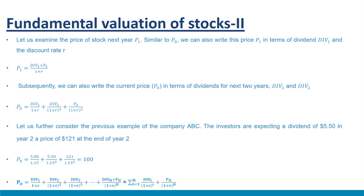We will develop a generic formula for the valuation of common stocks with the help of dividends. Till now, we have expressed the current price P₀ in terms of this year's dividend Div₁ and the price expected at the end of the year P₁. Let us move toward a more generic formula. We can write P₁ in terms of dividend Div₂, price P₂, and discount rate R: P₁ = (Div₂ + P₂) / (1 + R). Subsequently, the current price P₀ can be written in terms of dividends for the next two years: P₀ = Div₁/(1+R) + Div₂/(1+R)² + P₂/(1+R)².